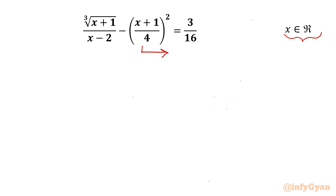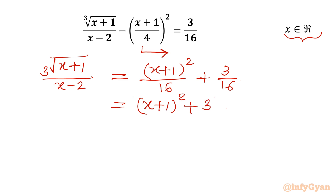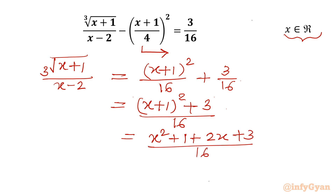I will move the term to the RHS. So I can write: cube root of (x + 1)/(x - 2) equals (x + 1)²/4 + 3/16. The denominator is the same, so I can add the numerators: (x + 1)² + 3, divided by 16. Expanding using (a + b)² = a² + 2ab + b²: x² + 2x + 1 + 3 over 16, which gives x² + 2x + 4 over 16.